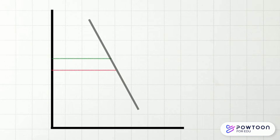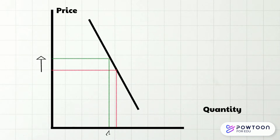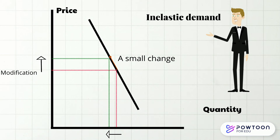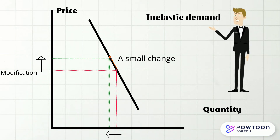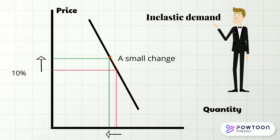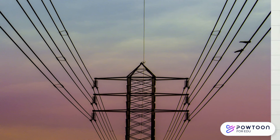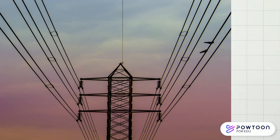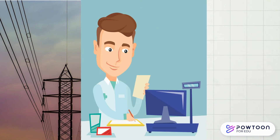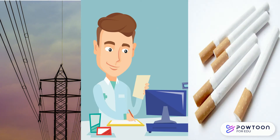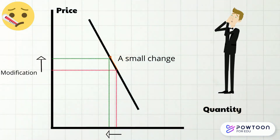On the other hand, a good that is inelastic does not have very stretchy demand. In economic terms, the quantity demanded does not change a lot when the price changes. If the price of a good increases by 10% and the quantity demanded decreases by only 5%, that good is said to have inelastic demand. The most common goods with inelastic demand are utilities, prescription drugs, and tobacco products. In general, necessities and medical treatments tend to be inelastic.